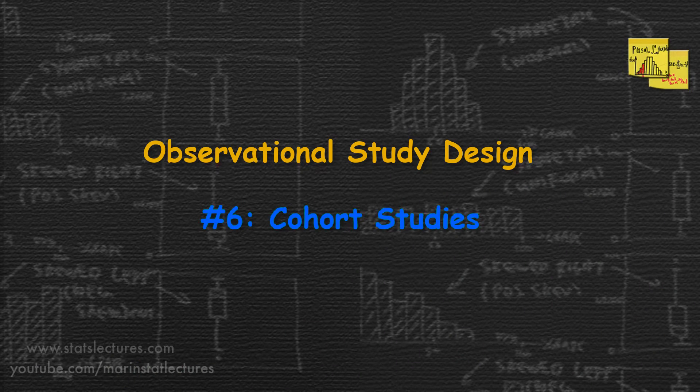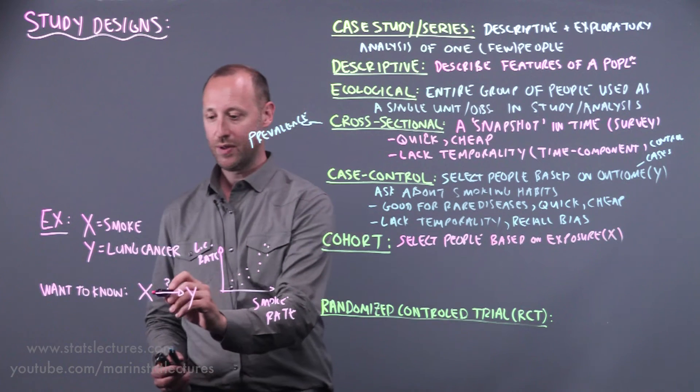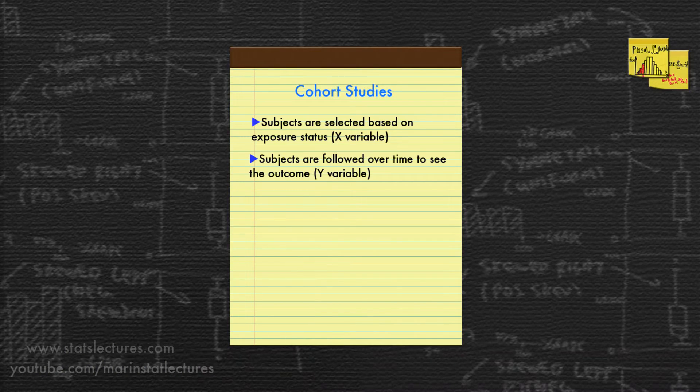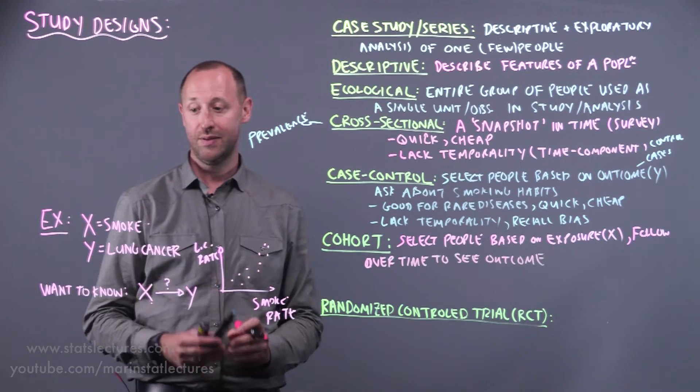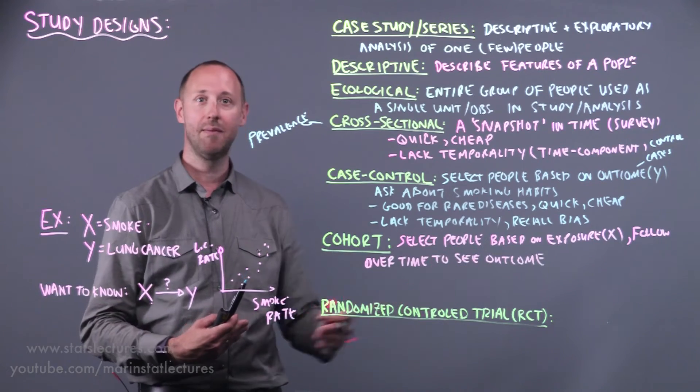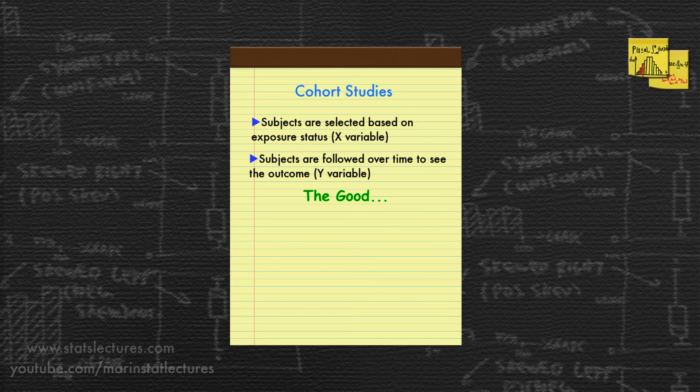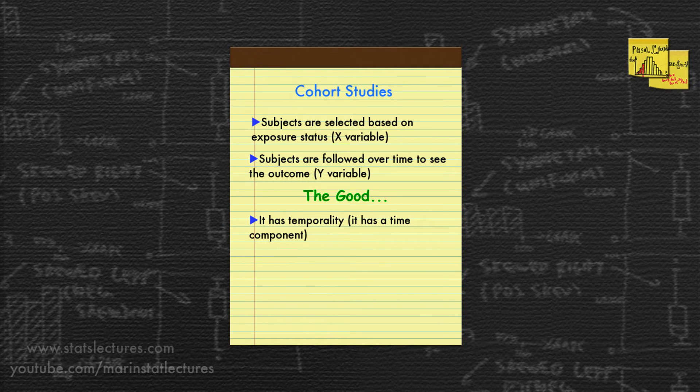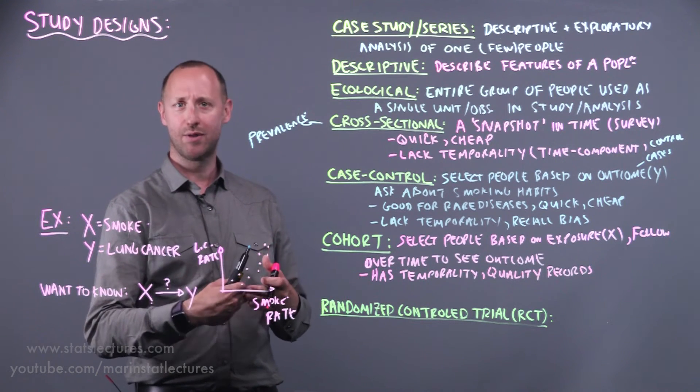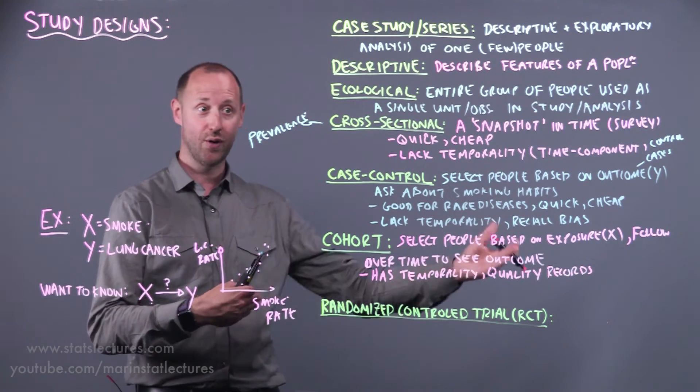Now let's take a look at cohort designs. These are where we select people based on exposure, the x variables. We select people who smoke or who do not smoke. We follow them over time to see the outcome. In other words, we select people who smoke, who don't smoke. Then this is a cohort that we follow forward in time and we see how many of them develop lung cancer or don't develop lung cancer. Some of the nice things about this design is it has temporality or it has some time component. We are following people over time, which also means we get good quality records. If we're able to follow people forward in time, we can record how much they're smoking much more reliably. We can record changes in smoking, if they started smoking more or less, or if they quit or if they started.